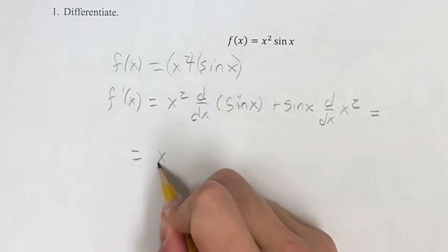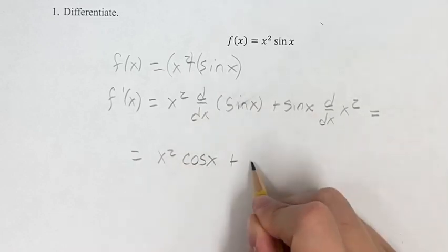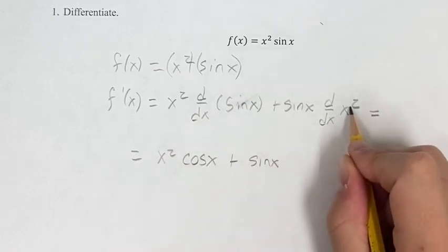So we have x squared times the derivative of sin x, which we know is cosine, plus sin x times the derivative of x squared.